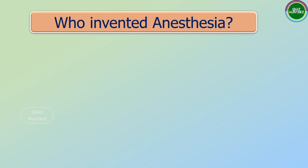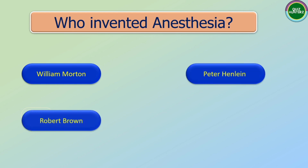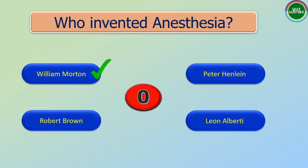Next question: Who invented anesthesia? The options are: William Morton, Peter Henlin, Robert Brown, Leon Alberti. And the correct answer is William Morton.